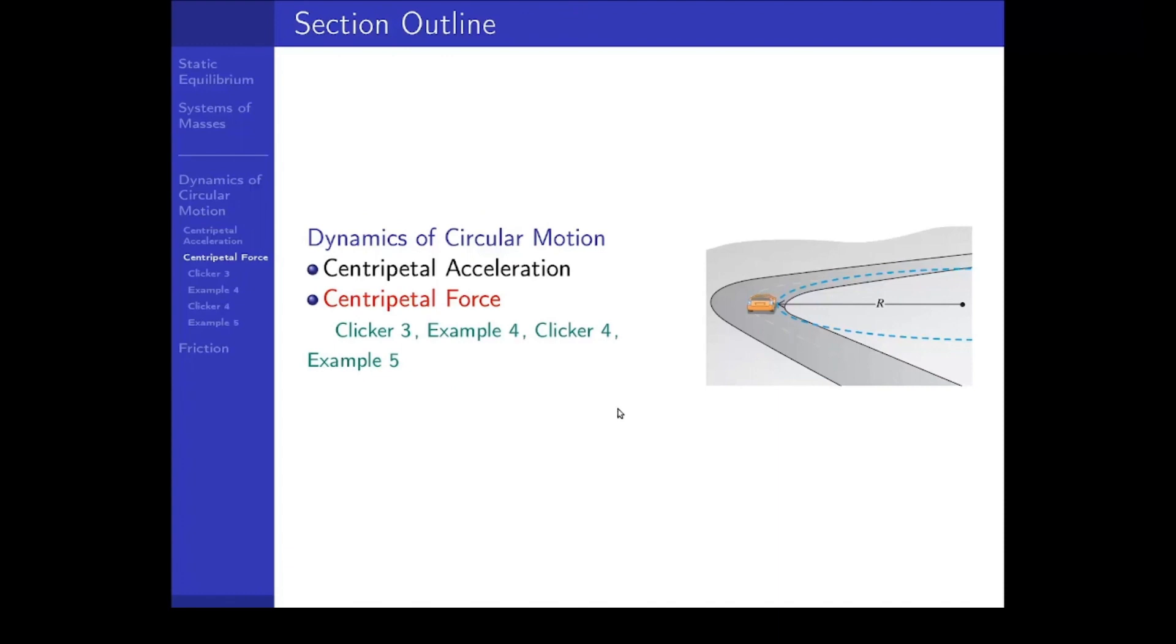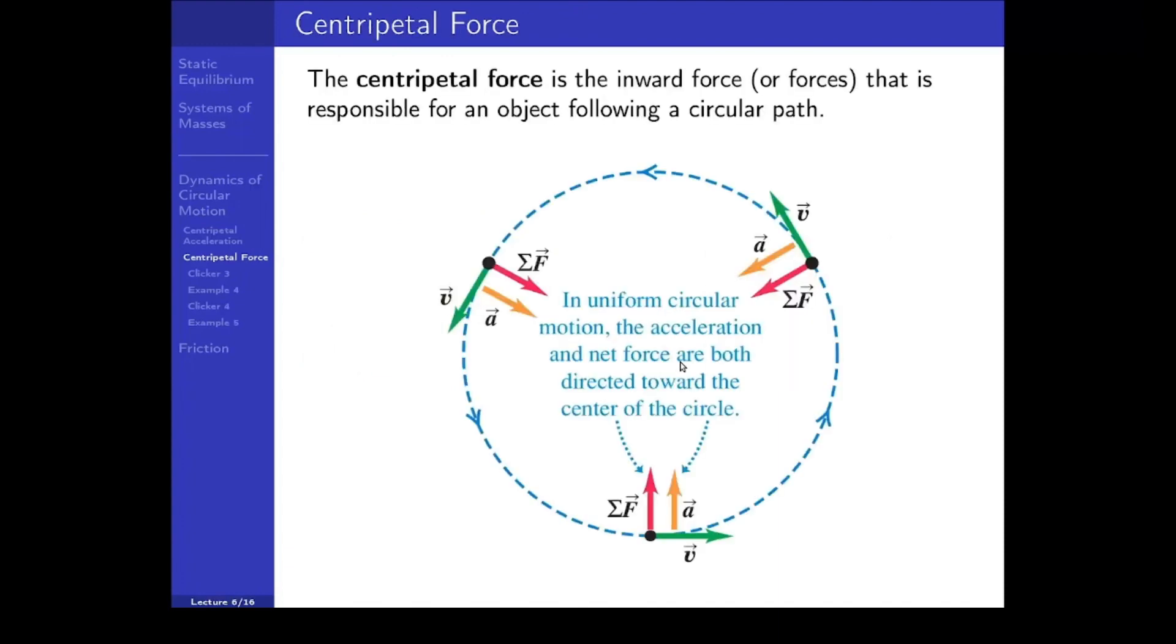Now what causes an inward acceleration? Well we know that from Newton's second law it's a net force that causes acceleration. We will sometimes call the net inward force the centripetal force that is responsible for an object following a circular path. There must be a net inward force if you are undergoing circular motion.